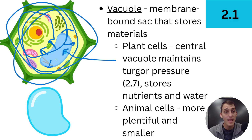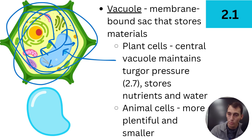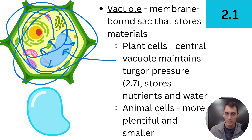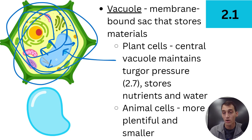Animal cells have vacuoles as well, just not a central vacuole. We have smaller vacuoles spread throughout the cell, also for storage. Plant cells have one large central vacuole while animal cells have several smaller ones.